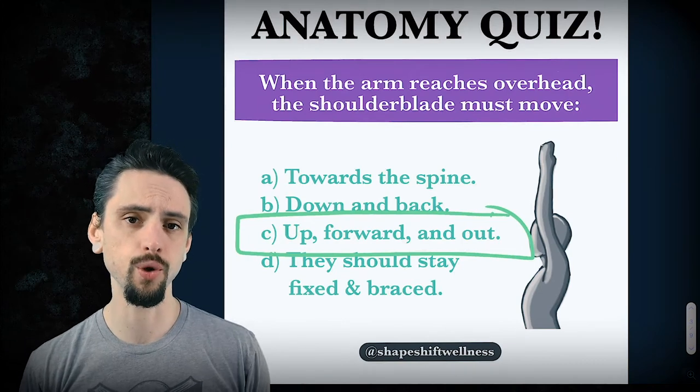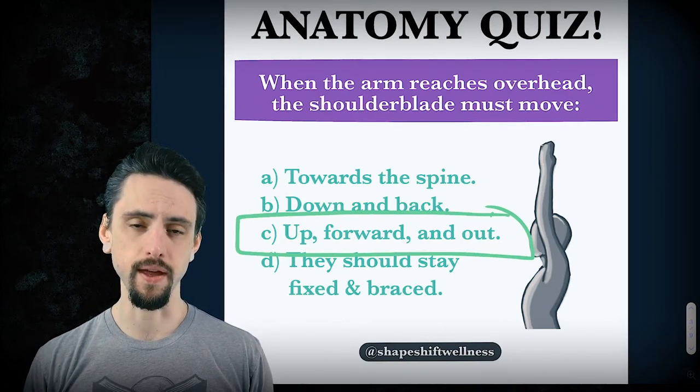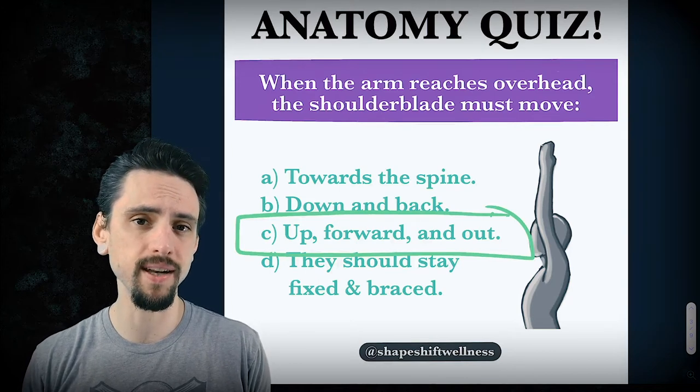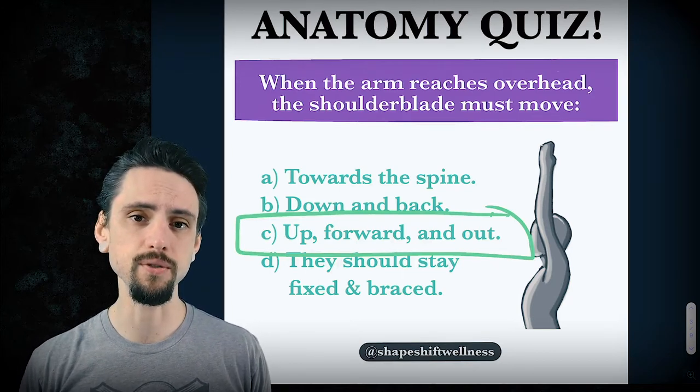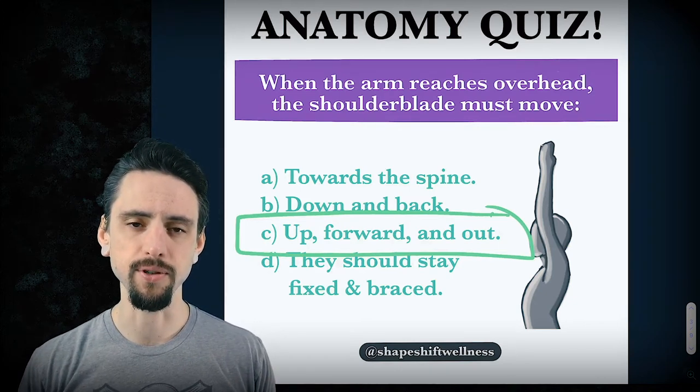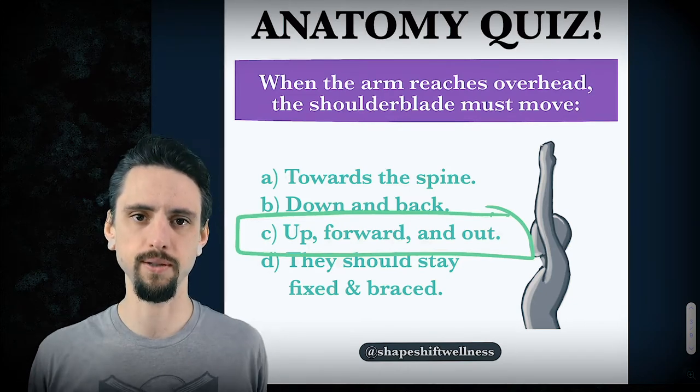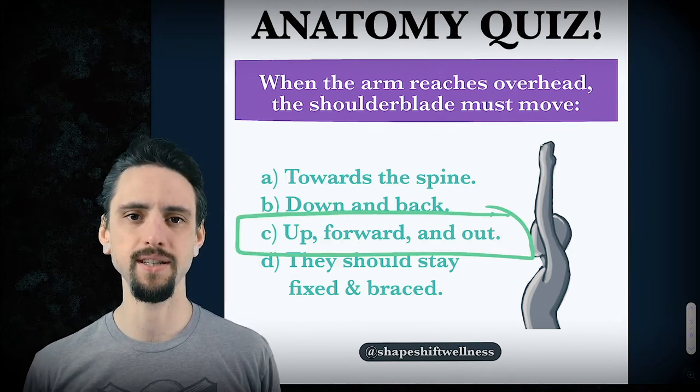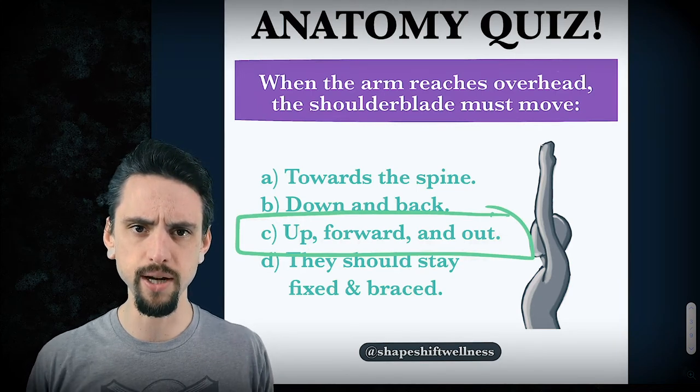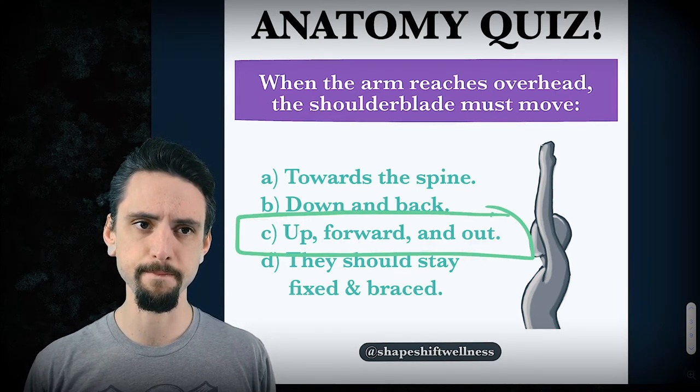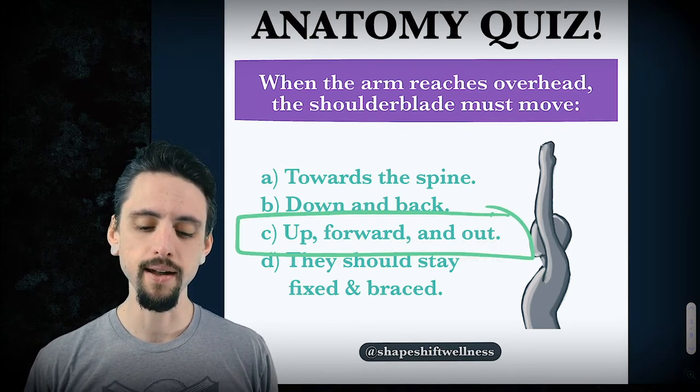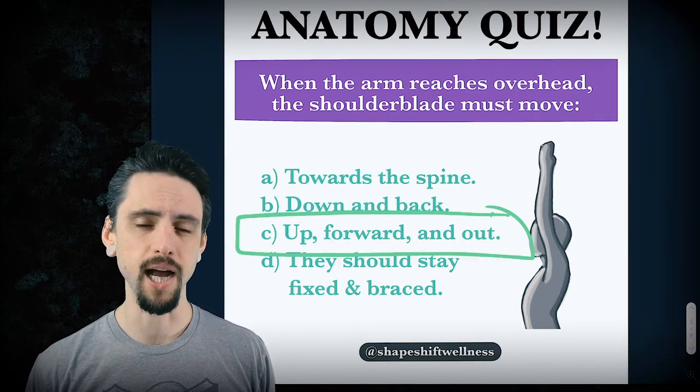When the arm reaches overhead, the shoulder blade must move with it. If you reach forward and up, the shoulder blade has to go forward and up. If you reach back and down, then the shoulder blade goes back and down. If you're in a class and people are telling you you've got to retract your shoulder blades, pull them to your spine, pin your shoulder blades down and back, they really need to stay fixed, brace them for stability - all of these things sound believable, they sound plausible, but they are wrong in terms of the biomechanics.